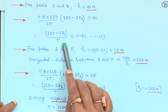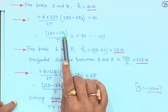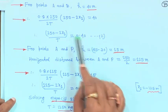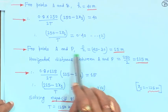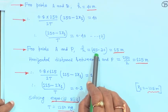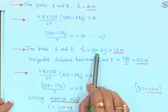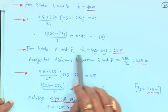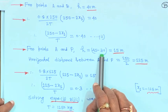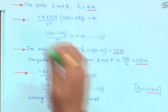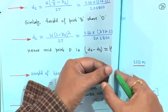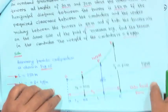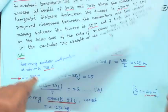Therefore this equation can be written as (250 minus 2·x1) over T is equal to 0.4. This is equation 2. For points A and P, the midpoint from the water level is 45, so the difference between point A and point P is 45 minus 30, that is 15 meter. This is also shown in the diagram.